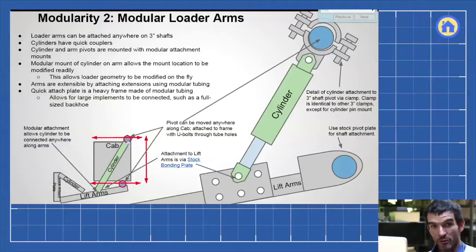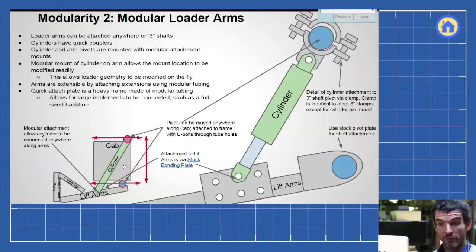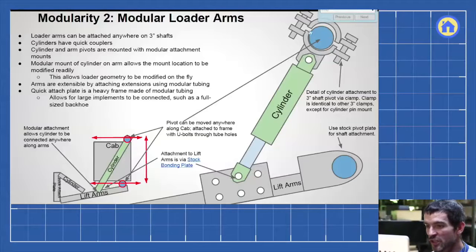Take a look at the modular loader arms. They're unique in the sense that you can move the attaching 3-inch shaft, so the loaders and cylinders attached with this 3-inch shaft, you can move that anywhere, on the top, bottom and the back of the cab. So you can attach the lift arms either low, like in this configuration for a bulldozer, or actually high with the cylinder underneath as you need. So highly modular, we can shift where the cylinders attach around.